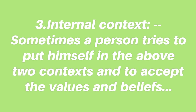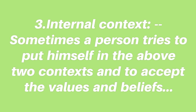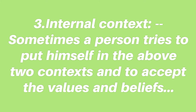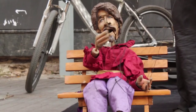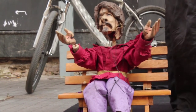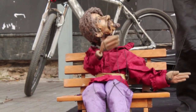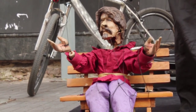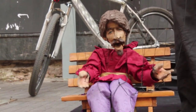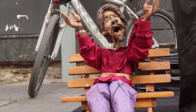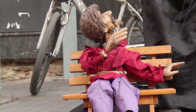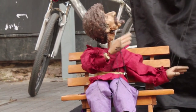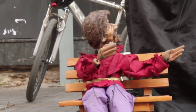Third, internal context: sometimes a person tries to place himself within the above two contexts and to accept the values and beliefs established through institutional and interpersonal contexts. The matrix of domination occurs when people of the community ask a person to live within the predefined regulations defined by his race, gender, or sexual orientation. Any person who tends to defy these predefined regulations has to face some kind of oppression from the identity type-casting society.